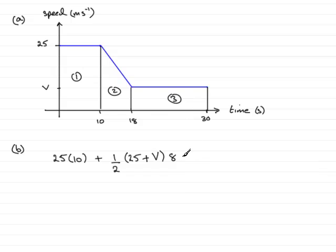Now we need to add 3. So the area of 3 being a rectangle is going to be the width, which is 12 units, multiplied by this length, which is V units, so 12V. And as I said earlier, the sum of these areas represents the distance traveled, and that is 526.